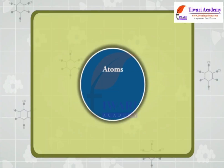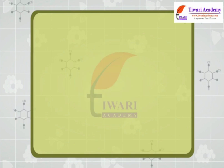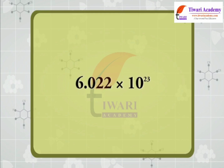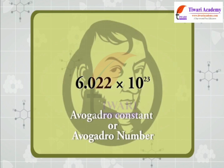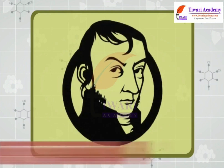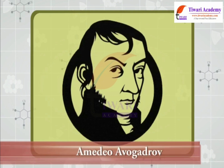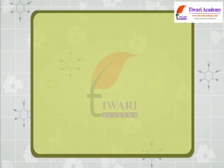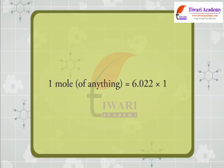The number of particles — atoms, molecules, or ions — present in one mole of any substance is fixed, with a value of 6.022 × 10²³. This is an experimentally obtained value called the Avogadro constant or Avogadro number, represented by N₀, named in honour of the Italian scientist Amedeo Avogadro. Thus, 1 mole of anything equals 6.022 × 10²³ entities.